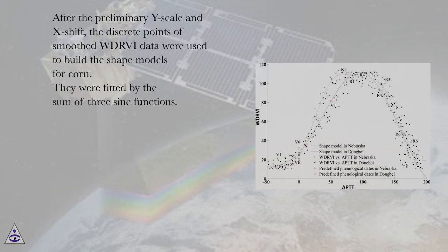After the preliminary Y scale and X shift, the discrete points of smooth WDRVI data were used to build the shape models for corn.